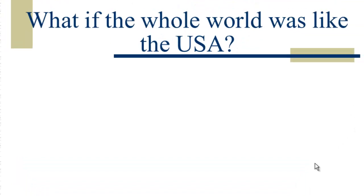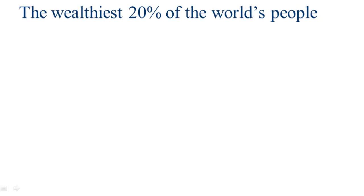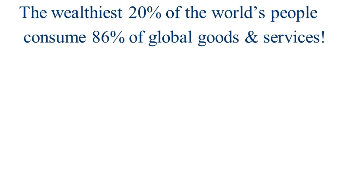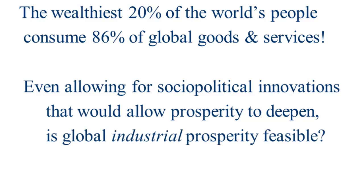So what if the whole world was like the USA? The answer is that carbon emissions would soar five-fold over their current levels. These steps show first China and then India coming on board, and the red bar shows that if the whole world were using energy from fossil fuels like the United States, you'd have five times the current level of carbon emissions. The wealthiest 20% of the world's people consume over four-fifths of global goods and services — again, that five-fold increase. And even allowing that we figured out ways to cooperate and create a more equal prosperity, we may not be able to achieve that industrially. Figuring out another route is a tremendous cooperation problem.